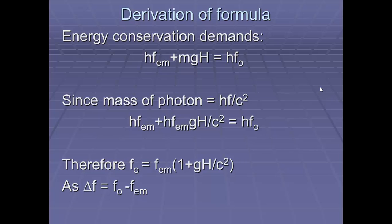the change in frequency, and it doesn't really matter which way it's going to be, is going to be the frequency observed minus the frequency emitted. So therefore I end up finding out that the change in frequency divided by frequency equals gh over c squared.